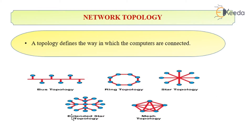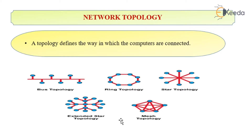As you can see in the diagram, here is one topology which is called the bus topology. This is a circular form of topology called the ring topology. The connection in the form of a star is called the star topology. This is an extended star topology or the tree topology. This one-to-one connection is called the mesh topology. Let us study these topologies in detail.